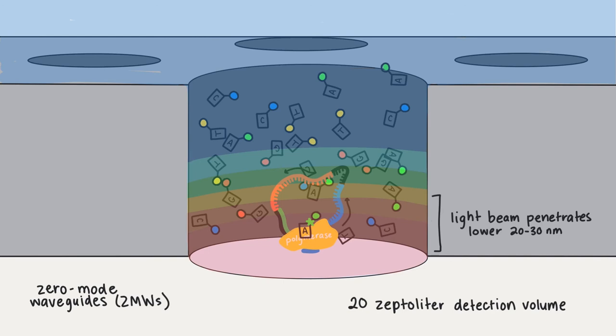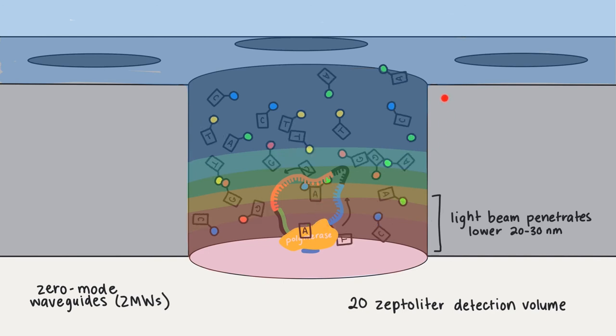Well, cleaving this phosphate also means releasing the attached fluorophore too so that it floats away and diffuses out of the observation zone past the 30 nanometer mark of the ZMW where the fluorescence is no longer observable by camera.